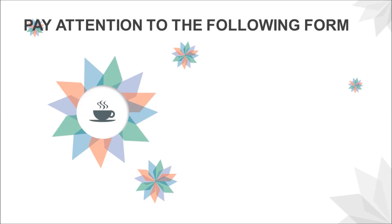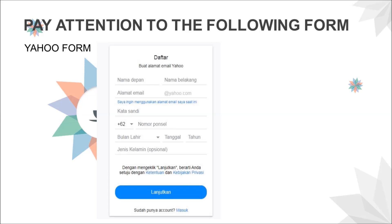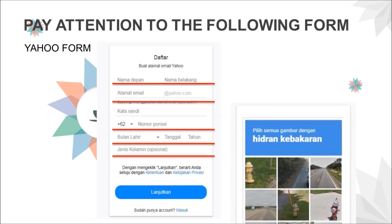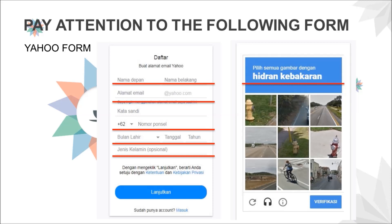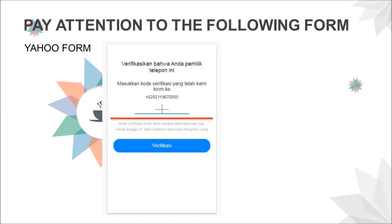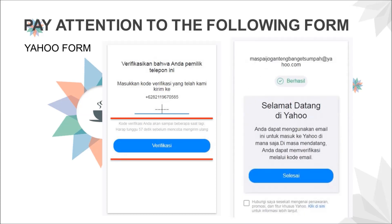That's all the data we have to fill in the Gmail online form. Now we go on to the next online form — Yahoo. The first data we have to fill in to join Yahoo is our name, then our username, password, phone number, birthday, and gender, which is optional. A verification code will also appear after we choose the best pictures related to the question asked. The code will also be sent automatically to our phone, and that's the final data we fill in to join the Yahoo account.